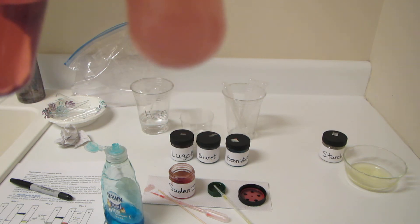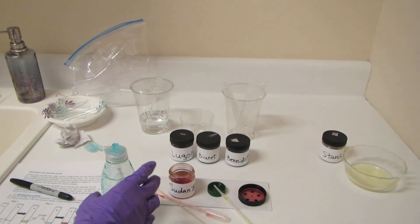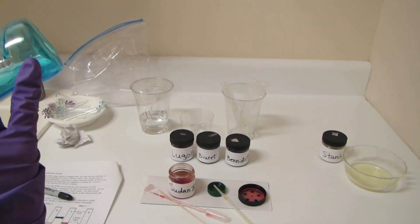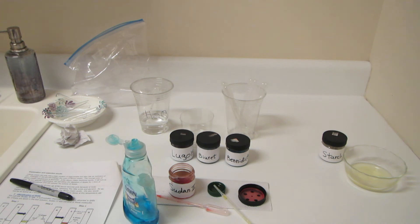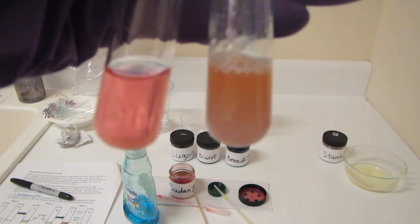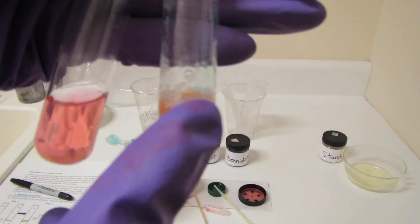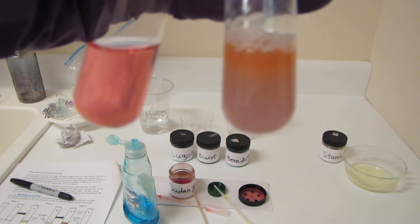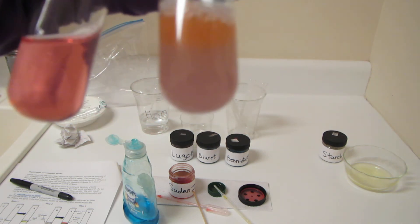So what's happening is that bile is surrounding these little fat droplets. It's surrounding them and allowing the fat to actually mix more uniformly with the water. So that when I now go ahead and compare these, you have two uniform solutions here. You no longer have the ring of fat sitting on top of the water solution.